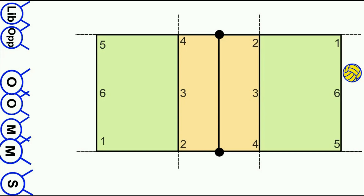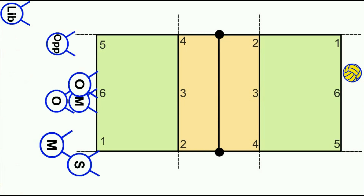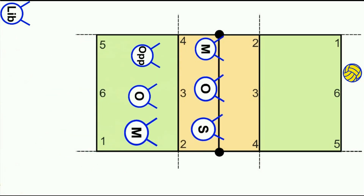Let's put six people onto court. We tend to use the standard where the setter follows the middle, follows the outside — setter/opposite follows middle, follows outside. Some teams do it differently with the setter following the outside, but traditionally a lot of people now use setter following the middle following outside, and that's what we'll use in today's example.